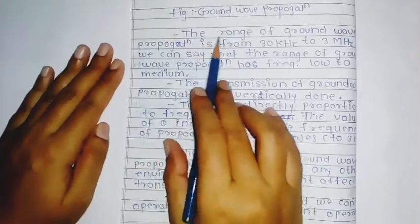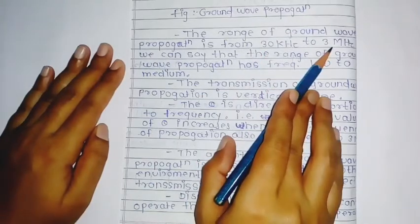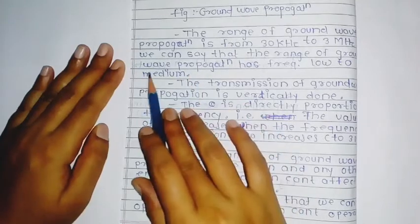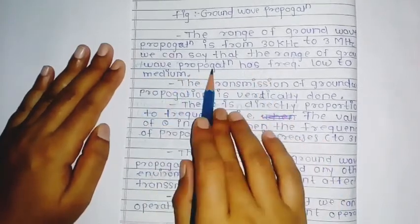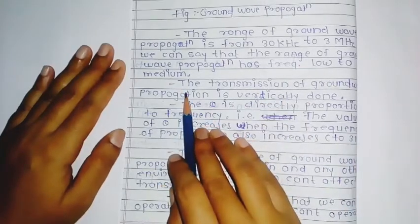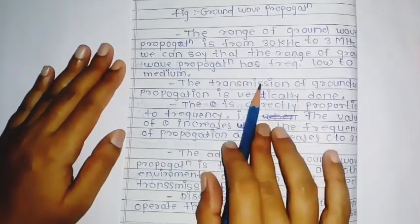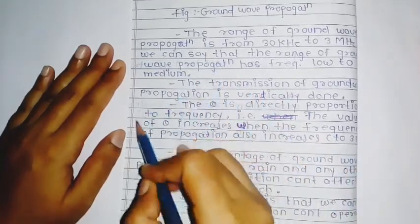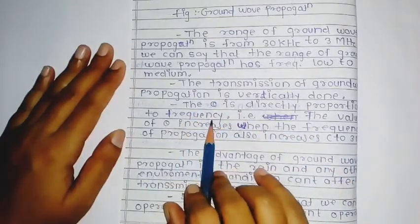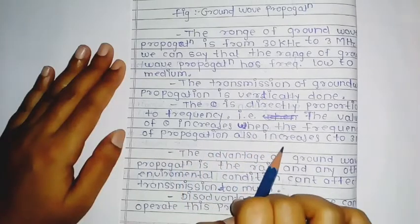To recap: the range of ground wave propagation is from 30 kHz to 3 MHz, which is low to medium frequency. The transmission of ground wave propagation is vertical. Theta is directly proportional to the frequency, so the value of theta increases when the frequency of propagation also increases.